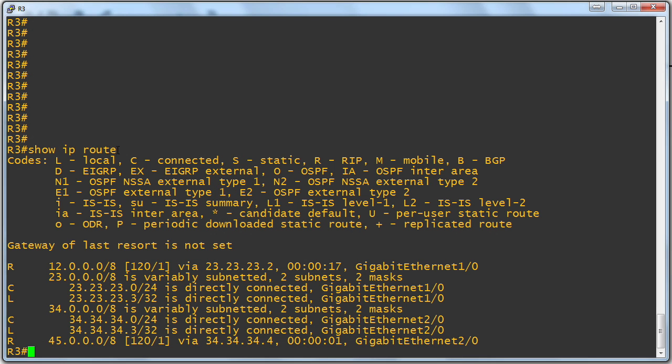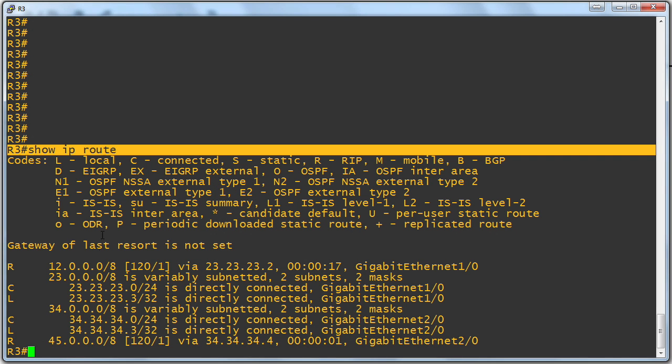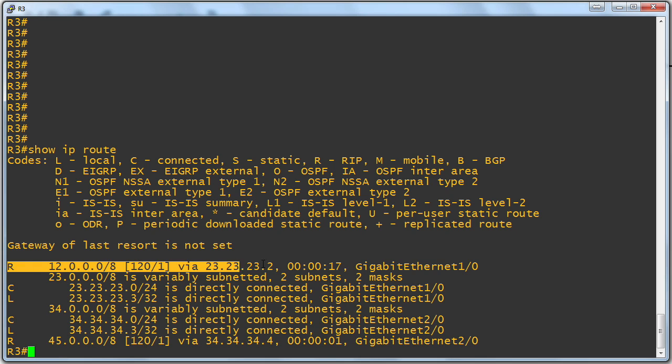Here we are on R3 with our show IP route command, and we can see the 12 network. Sure enough, on R3 it is one hop away as we expected. Something that's pretty troubling is the fact that we had a network of 12-12-12, and we can see it has been automatically summarized by RIP to 12-0-0-0. We'll have more to say on that later on in upcoming videos, but that is potentially problematic.